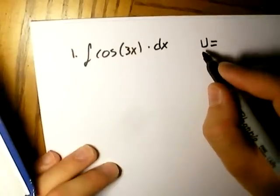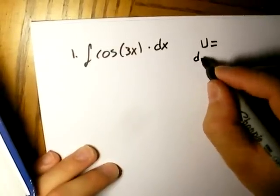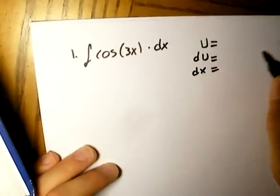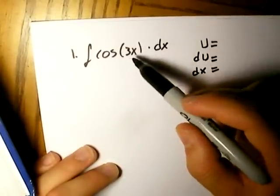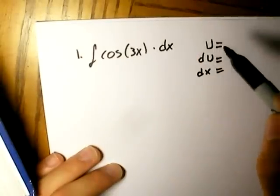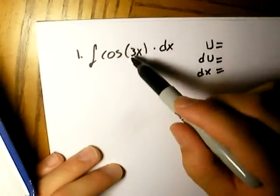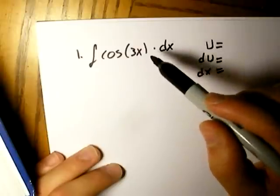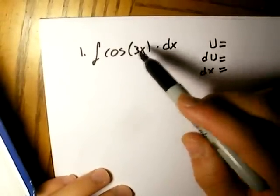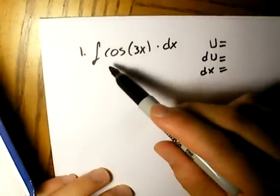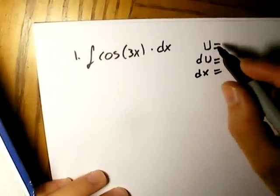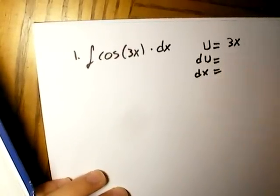So I'm going to show you guys how to do this. Okay, so what you do is you first set up your u, your du, and your dx. And what you want to do here is you're trying to simplify the integral. So what u variable can we substitute into it to make it an easier integral? Well, right here, right off the bat, we have cosine of 3x, and it's the integral of that. So what we're going to do is we're going to say u is equal to 3x.